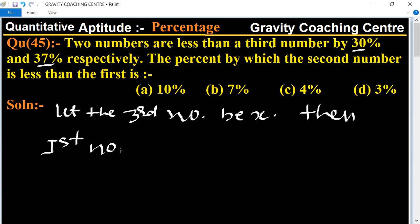Then first number equals 30 percent less, means 100 minus 30 equals 70 by 100 of x.